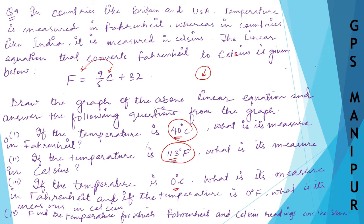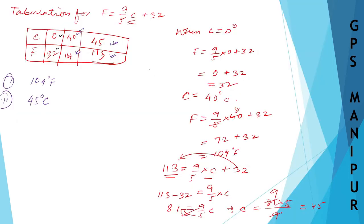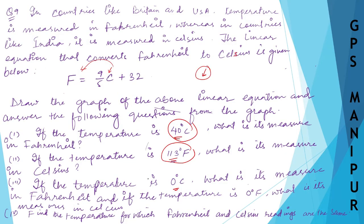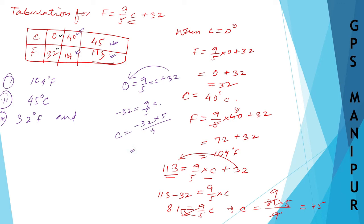Next: if the temperature is 113°F, what is it in Celsius? From the graph, F = 113 corresponds to C = 45, which we calculated. So the answer is 45°C. Third: if the temperature is 0°C, what is it in Fahrenheit? From the graph, when C = 0, F = 32°F.